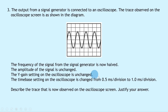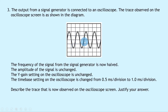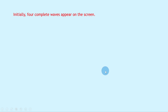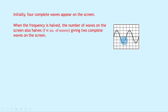Two things are changing and two things are staying the same: frequency is halved but the time base is doubled. Initially four complete waves appear on the screen. When the frequency is halved, the number of waves on the screen also halves, because frequency is proportional to the number of waves — it's the number of waves passing a point each second. So halving the frequency gives two complete waves on the screen.